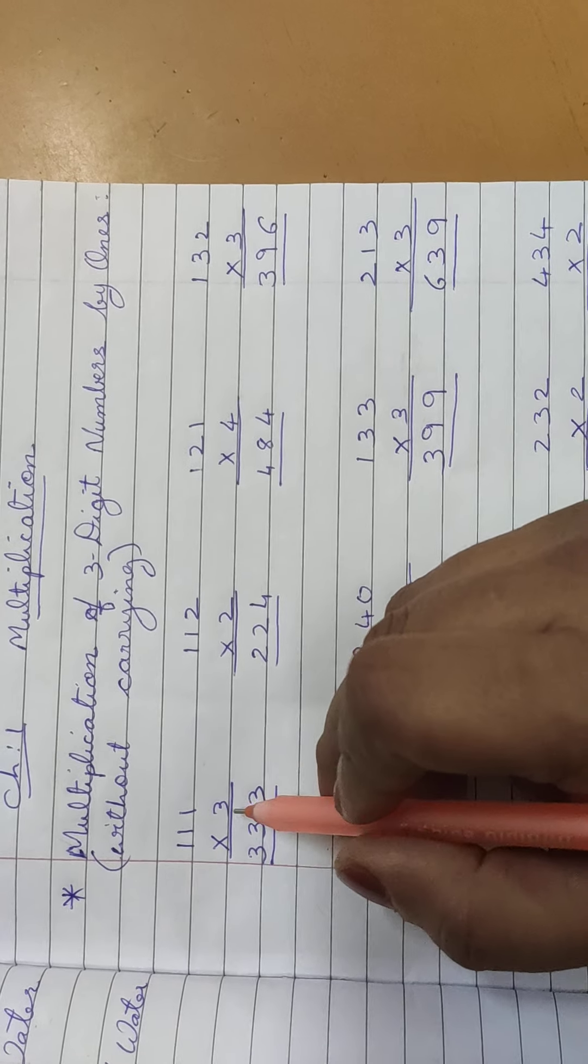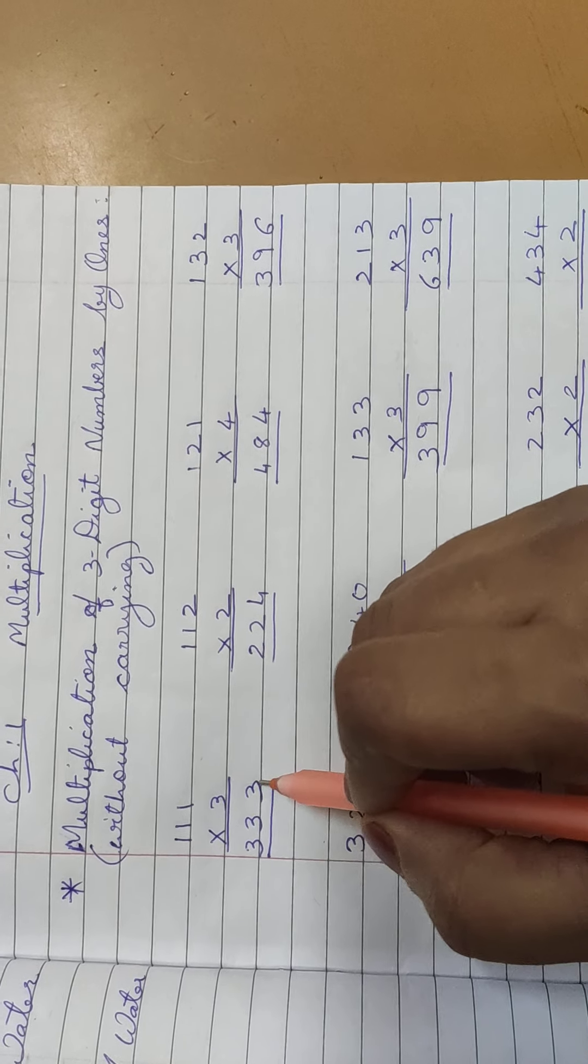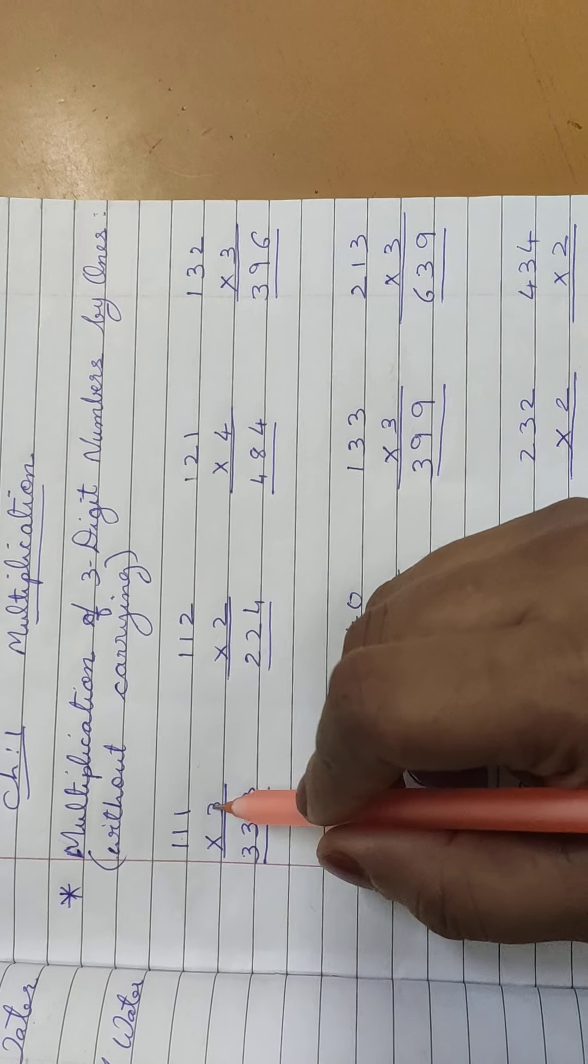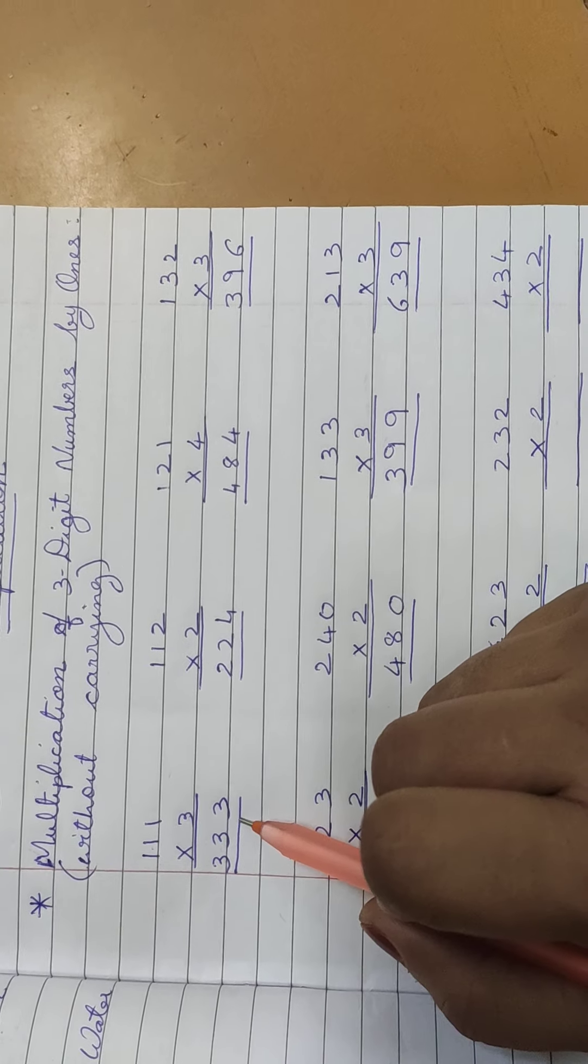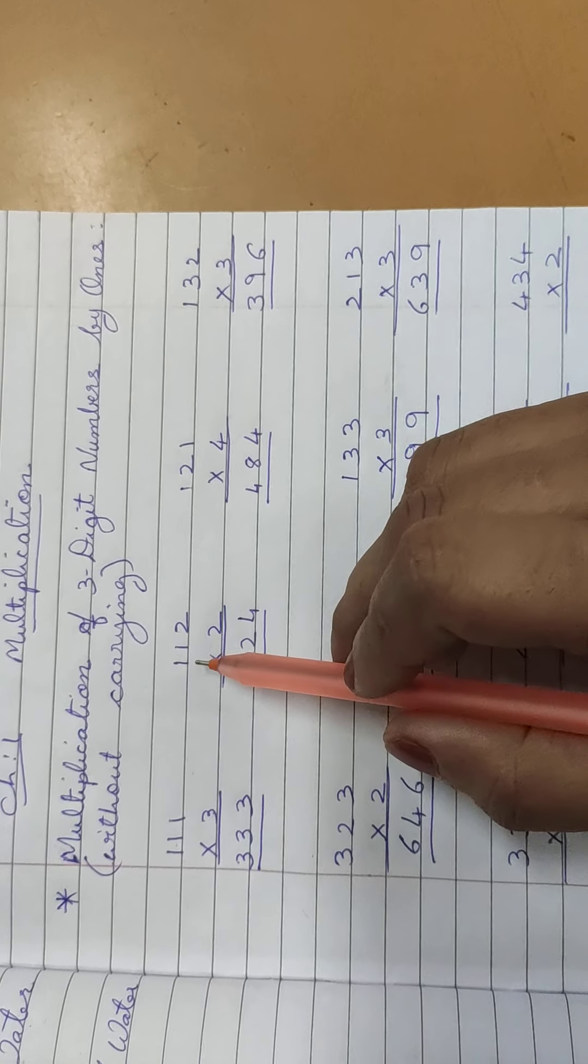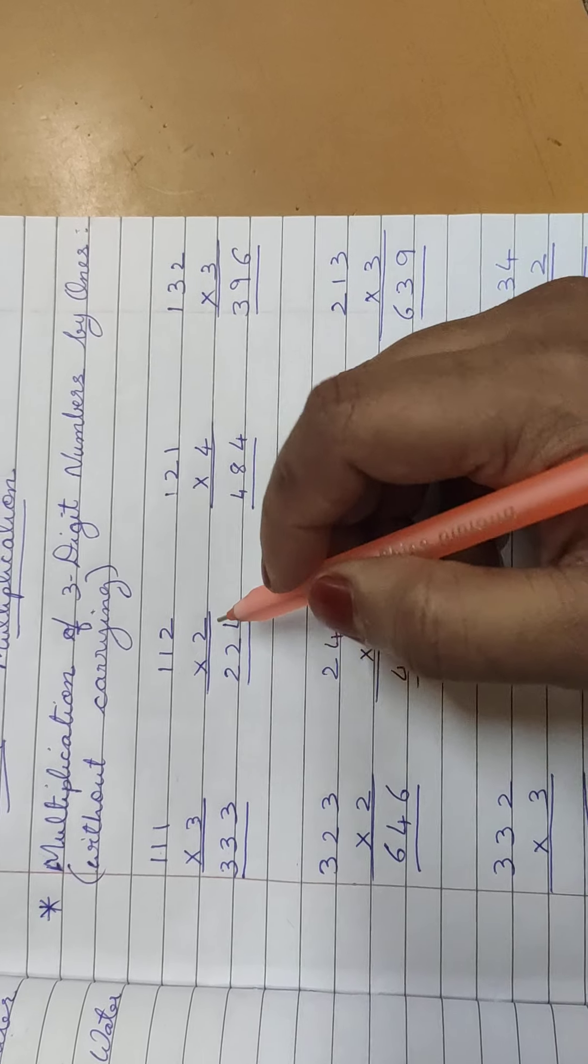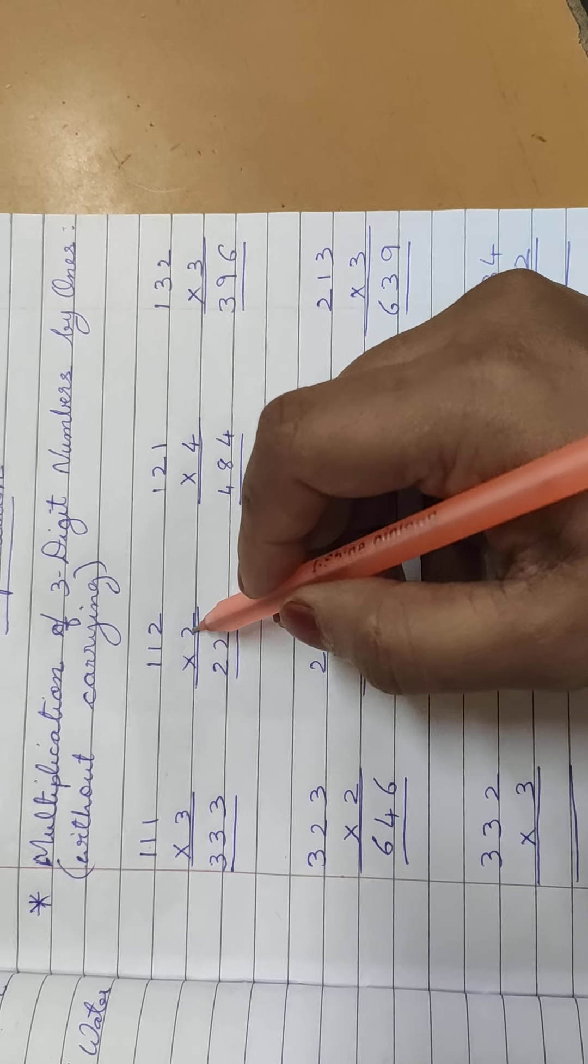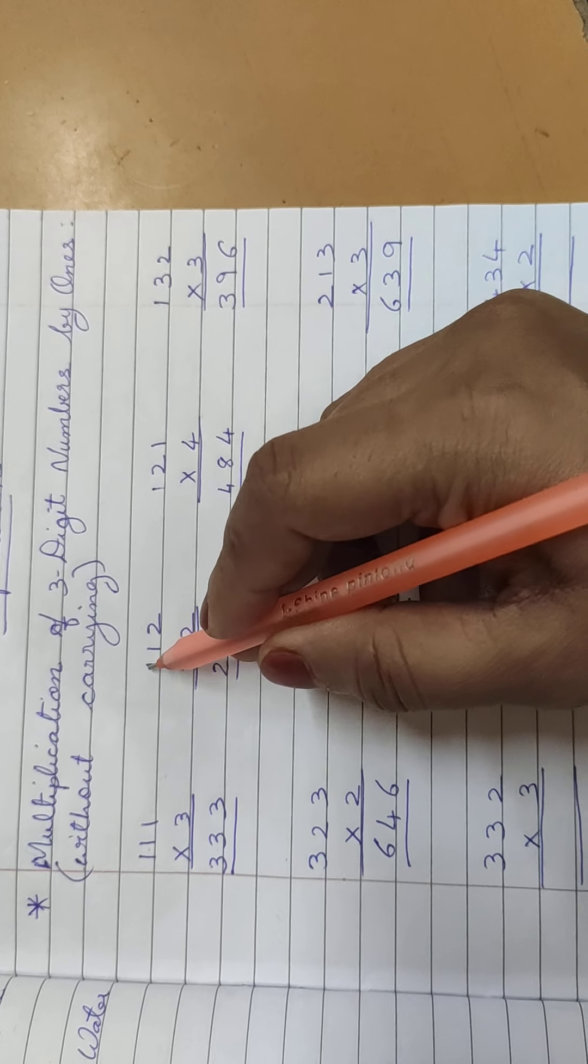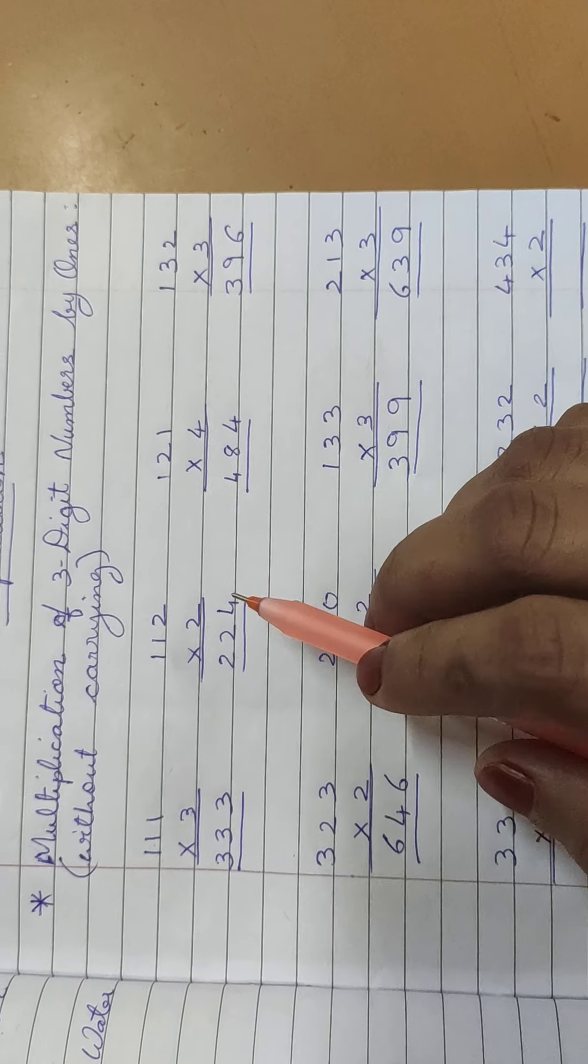So look here, 111 multiply by 3. 3 ones are 3, 3 ones are 3, 3 ones are 3, so our answer is 333. Now 112 multiply by 2. First we start from the last number - 2 twos are 4, 2 ones are 2, 2 ones are 2, so here our answer is 224.